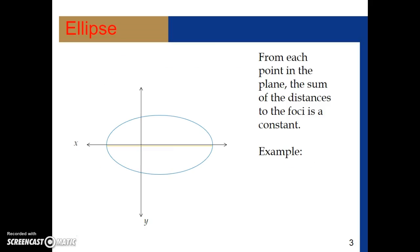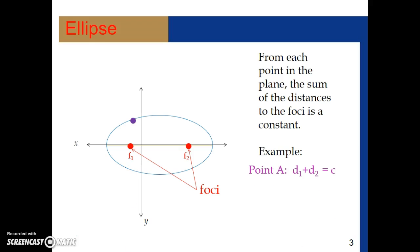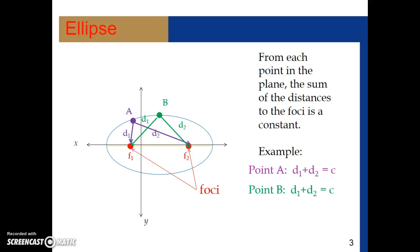From each point in the plane, the sum of the distances to the foci is a constant — we call that constant C. There's one focus and a second focus, and any point on the surface of the ellipse, for instance point A: if we add distance 1 and distance 2, we get the real number value C. For a separate point B on the ellipse, adding the two distances from each focus also equals the same constant C. That is the algebraic definition for an ellipse.